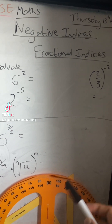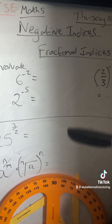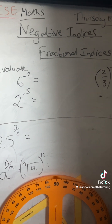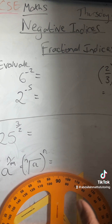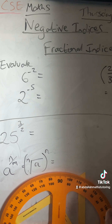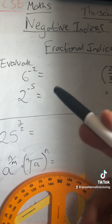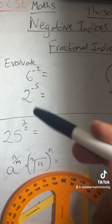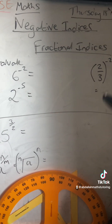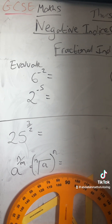GCSE 9 to 1 maths — a recap and revision lesson on negative and fractional indices in roughly 1 minute 30 seconds. So the first section is looking at negative indices, and the second section is looking at fractional powers.